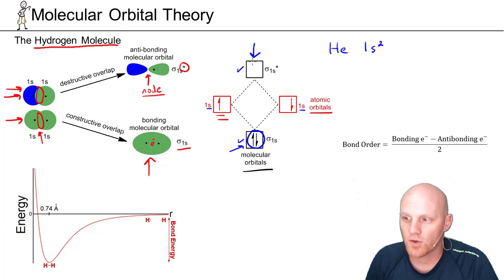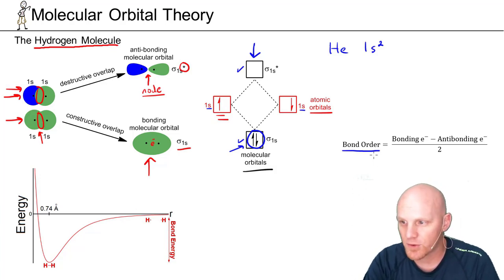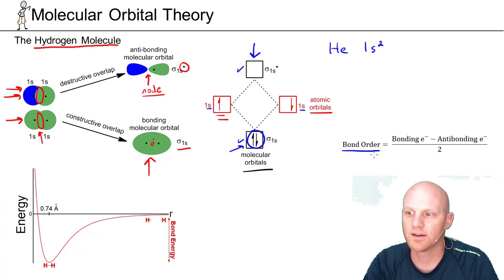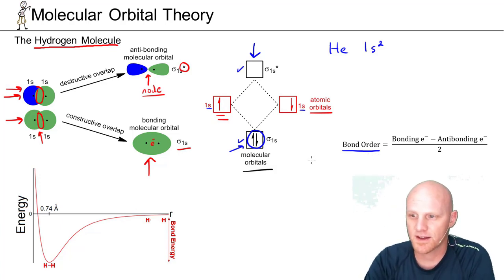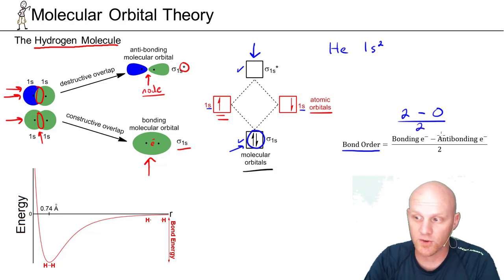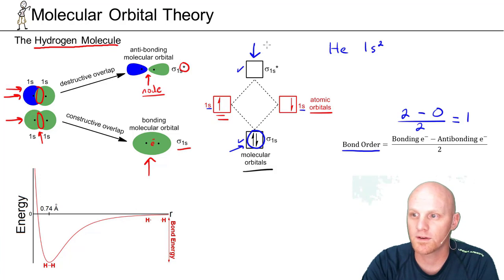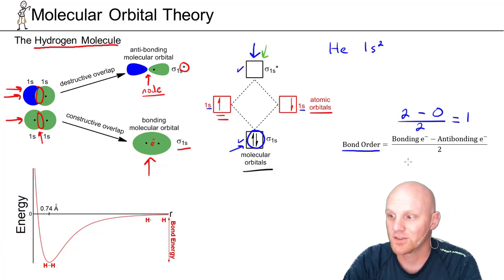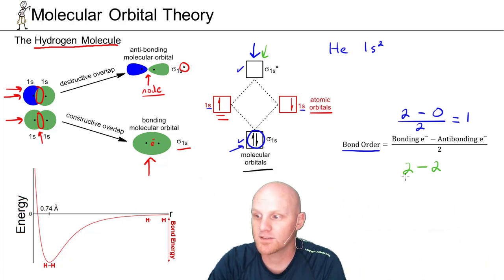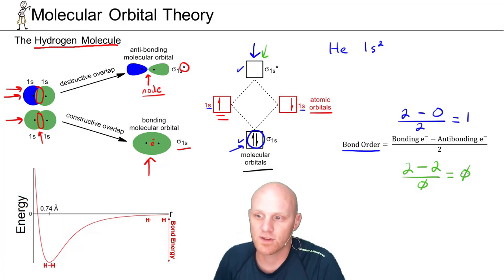We calculate bond order to describe how strong a bond is — it corresponds to single bond, double bond, or triple bond (bond orders of 1, 2, 3) in a Lewis structure sense. For hydrogen, there are two bonding electrons and no antibonding electrons; dividing by two gives a bond order of 1. For helium, you'd still have two bonding electrons but also two antibonding electrons, giving a bond order of zero — meaning no bond at all, which is why diatomic helium does not exist.